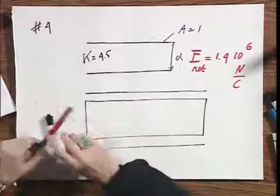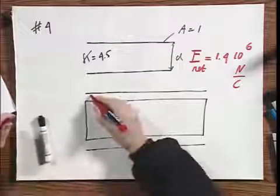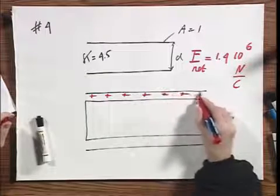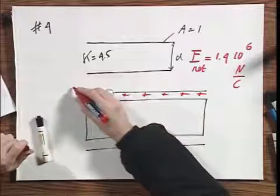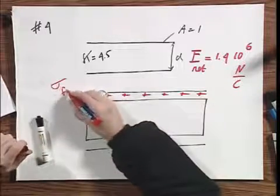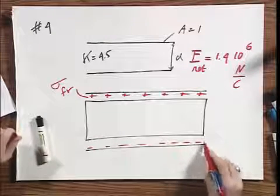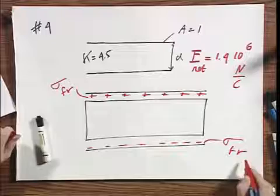Let's assume that the top plate is positively charged. Then there will be free charge here on this plate. Let's call it sigma free. And there will be an equal amount of negative charge. Again, sigma free.